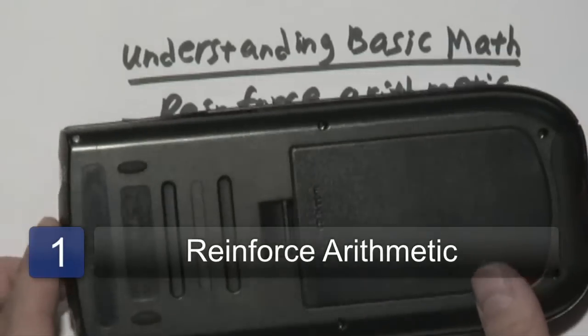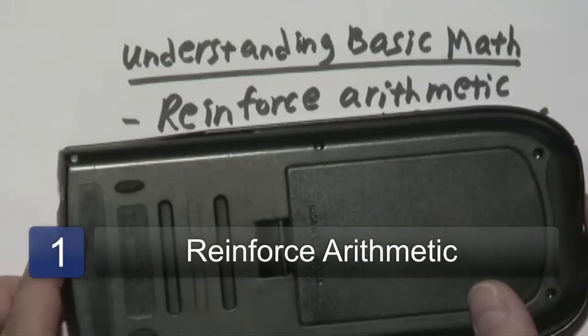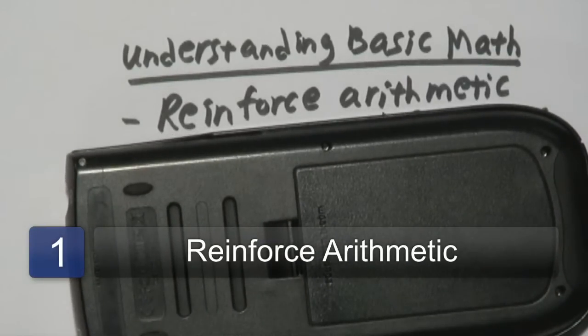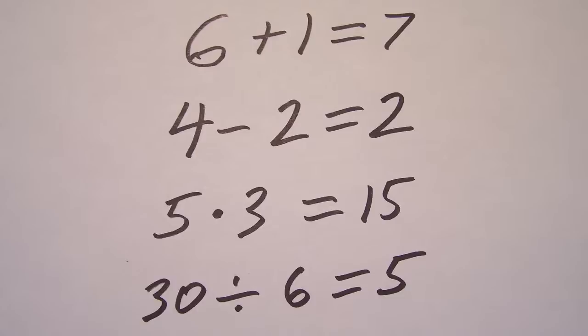Now, the first step when it comes to understanding basic math is definitely reinforcing your arithmetic. You have to go back to the fundamentals — the basic properties of addition, subtraction, multiplication, and division. A lot of things center around those four operations, and it's really important that you understand what those four are all about. Before you understand the more advanced math operations, you want to get those four down.